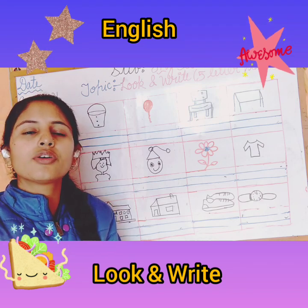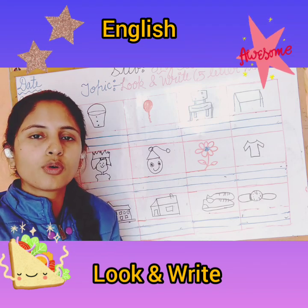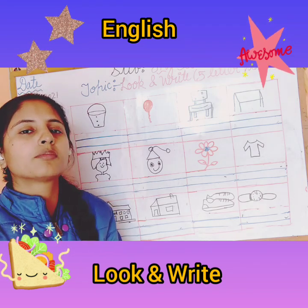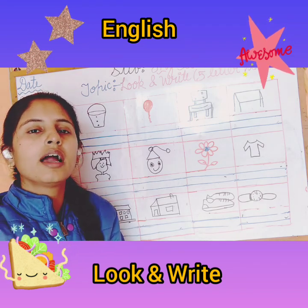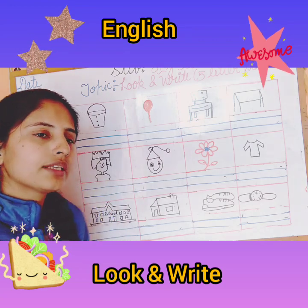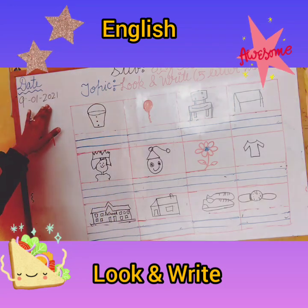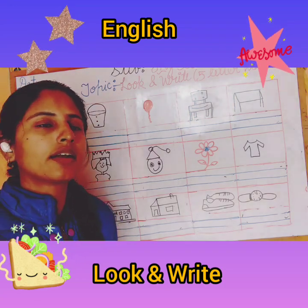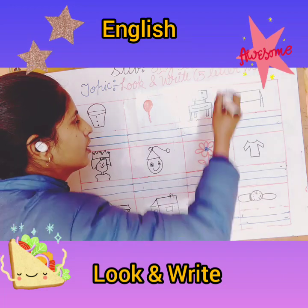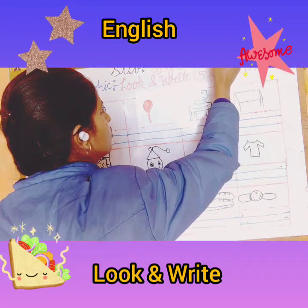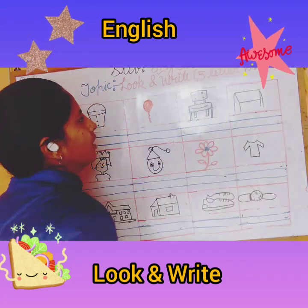Everyone, take out your English workbook, open page number 79, and write today's date, that is 9-1-2021. After writing the date, you will put CW on the top.